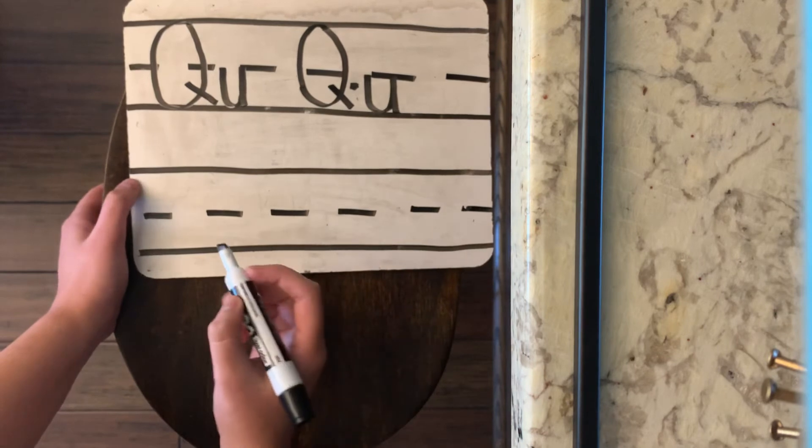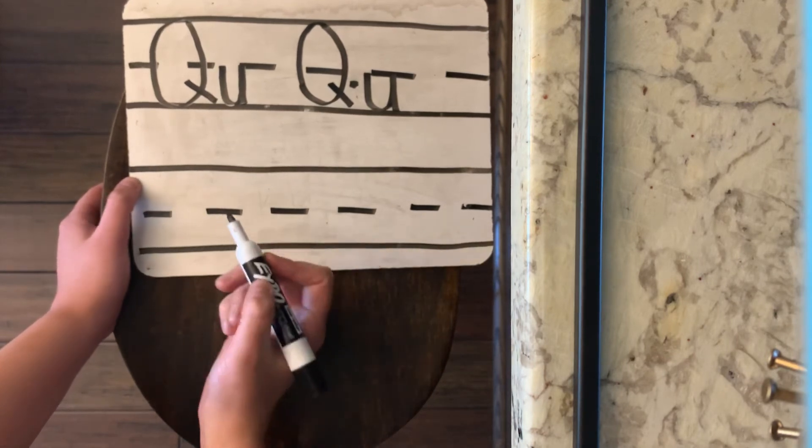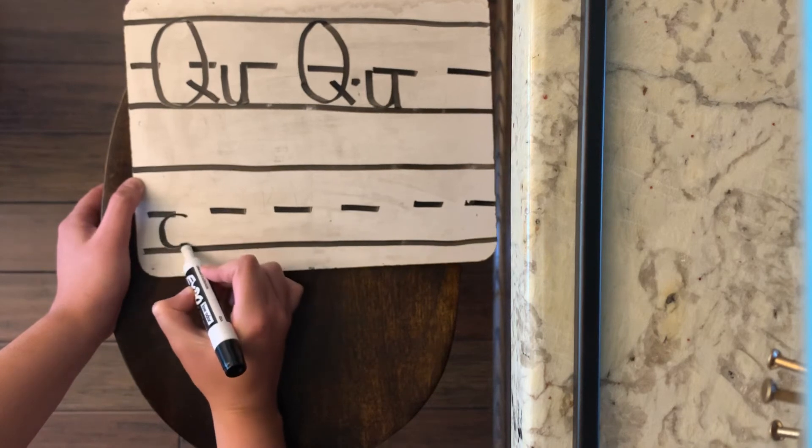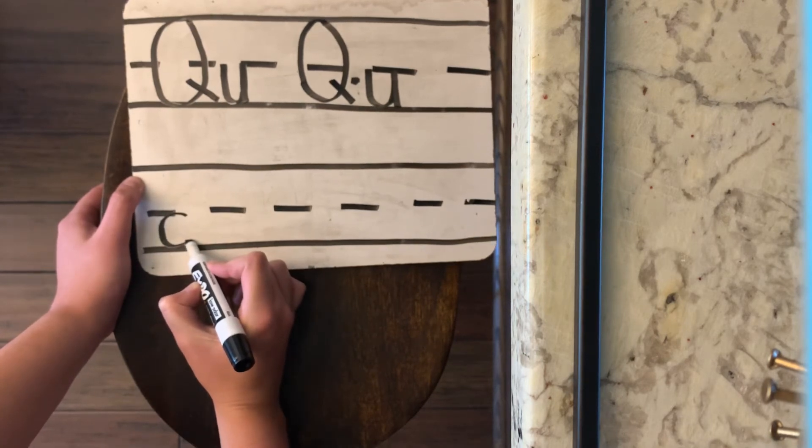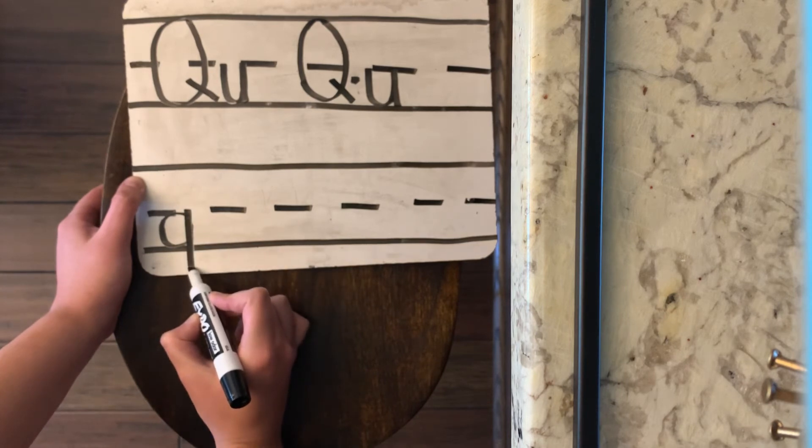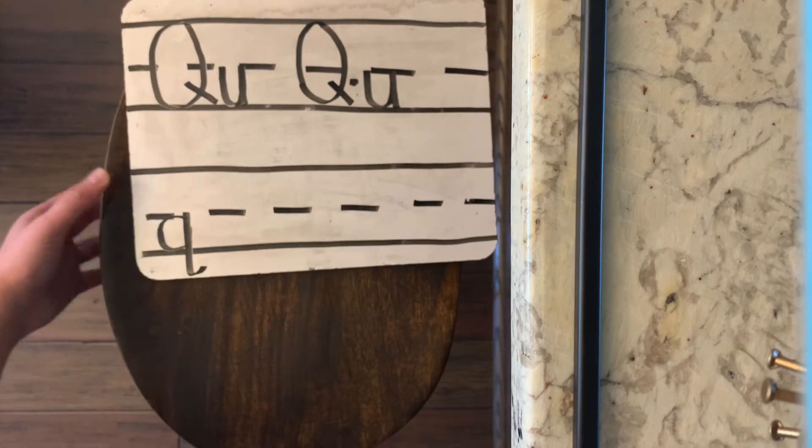So for lowercase q, it's a magic C letter. So we're going to make our magic C. We're going to go up and we're going to come down, kind of like we're making a G, but we're not going to go forward. We're going to go backwards instead.